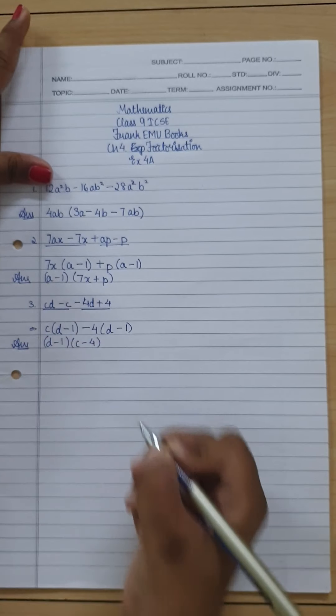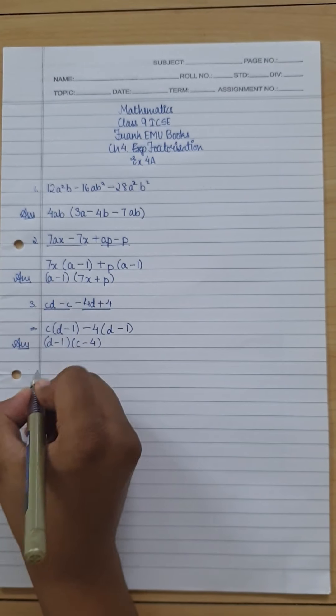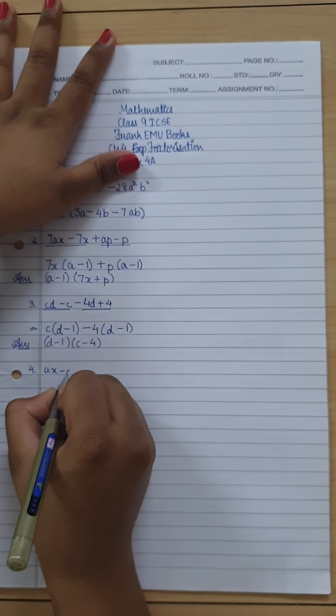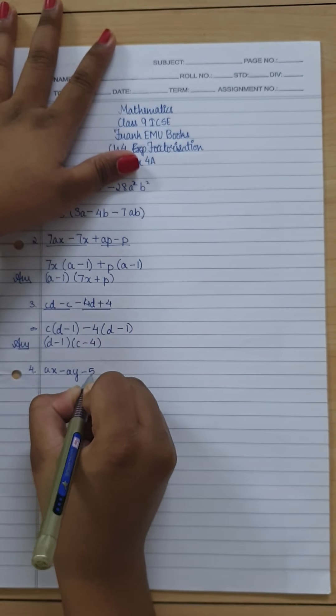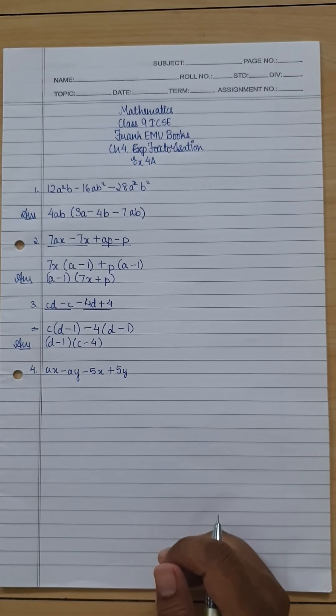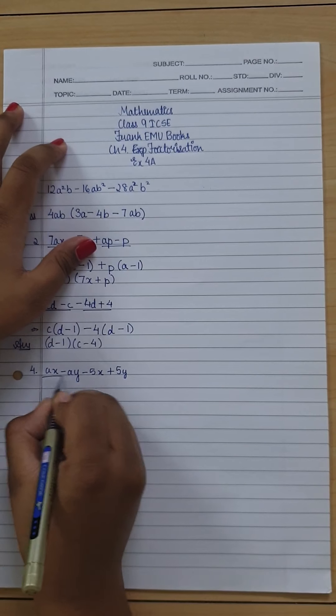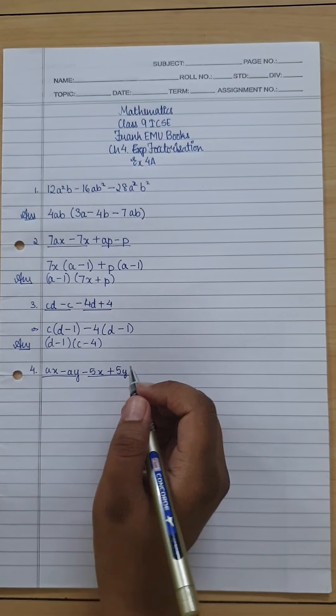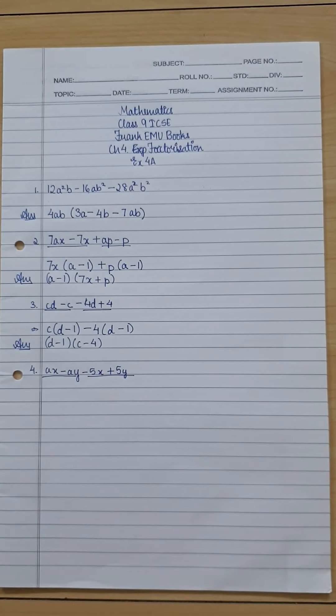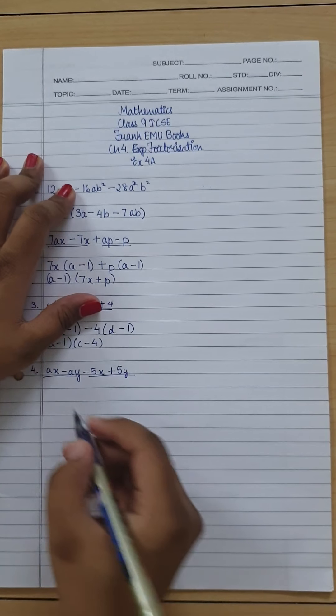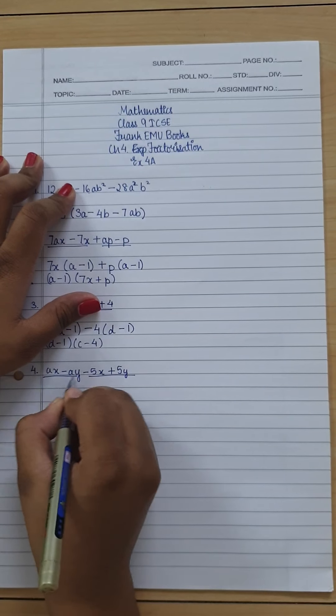Moving on to the fourth question: ax - ay - 5x + 5y. So we can just group the first and second and third and fourth in this case as well. These questions are pretty basic, but the next that we get in 6, 7, 8, 9, 10, they are kind of complex and we'll be doing that in the next video.